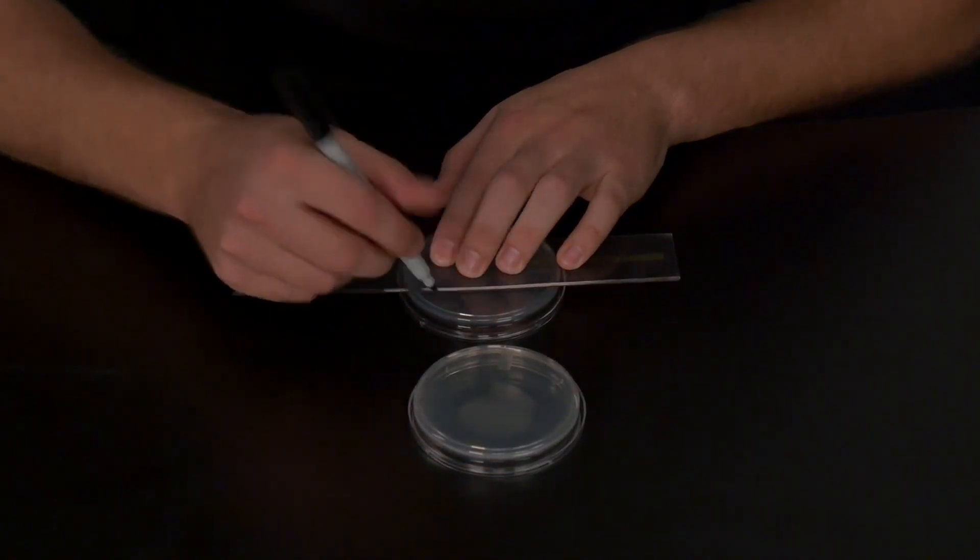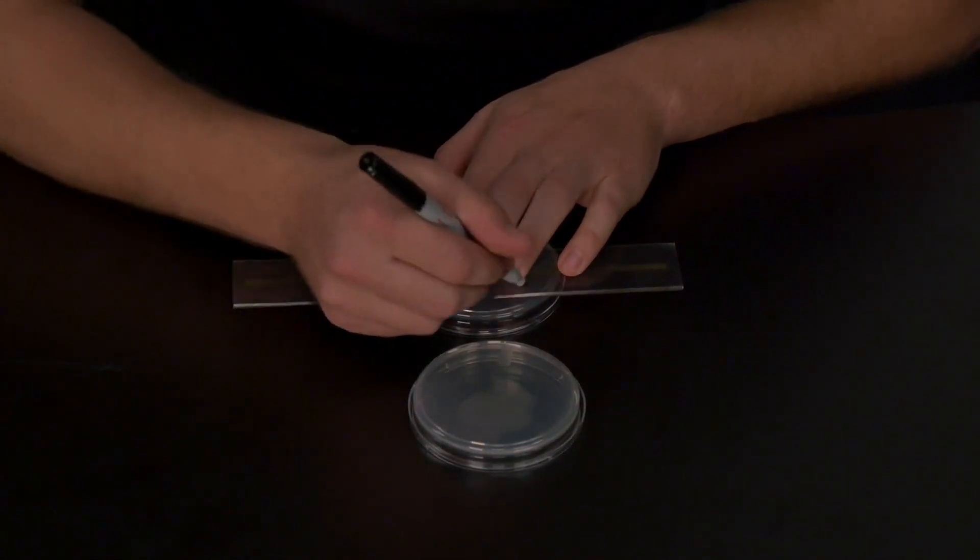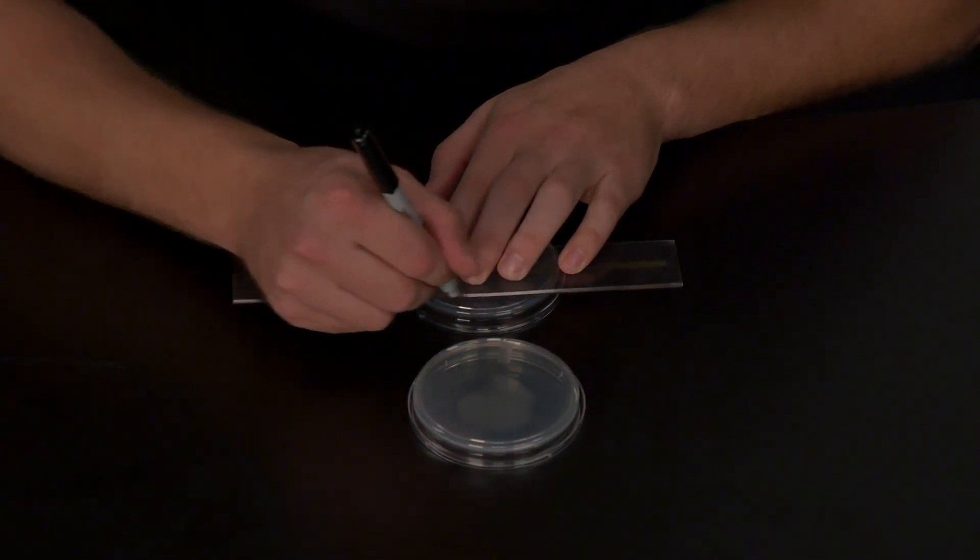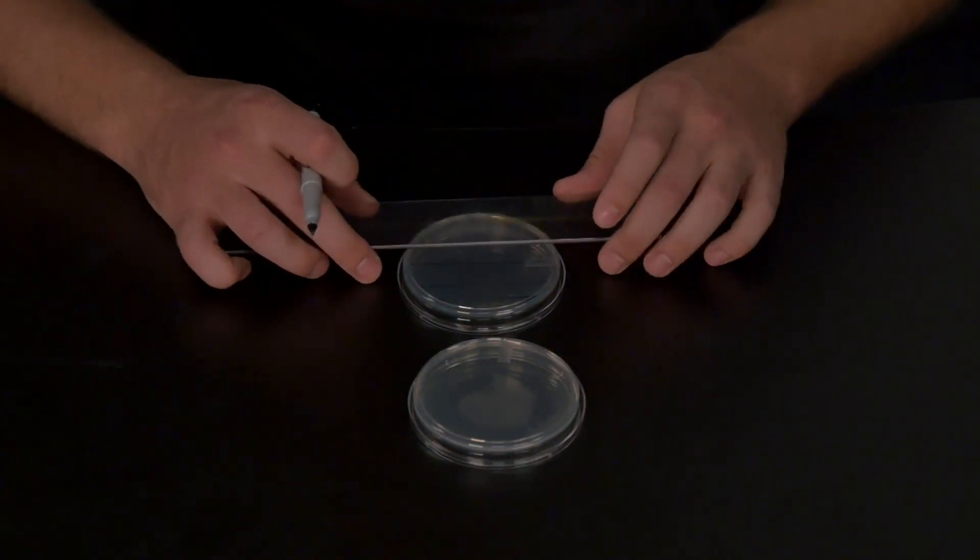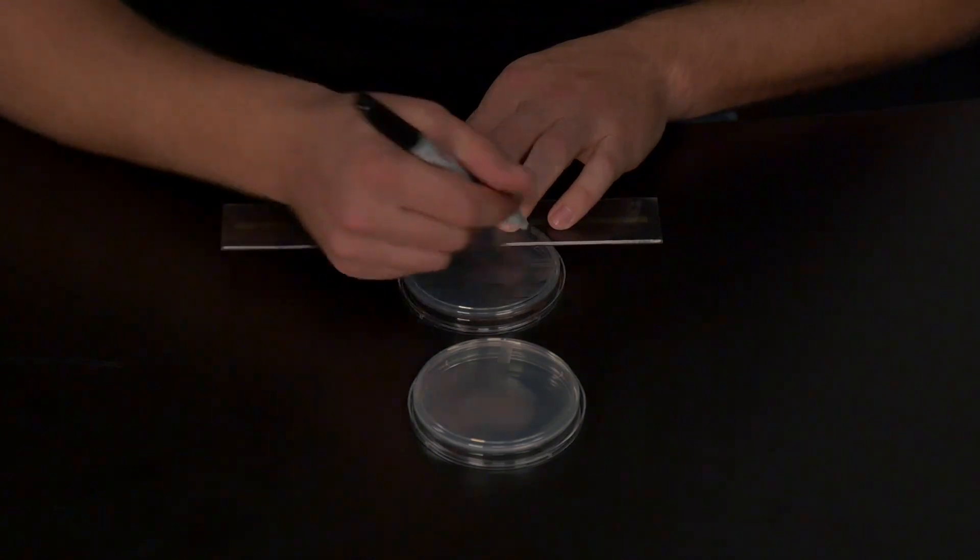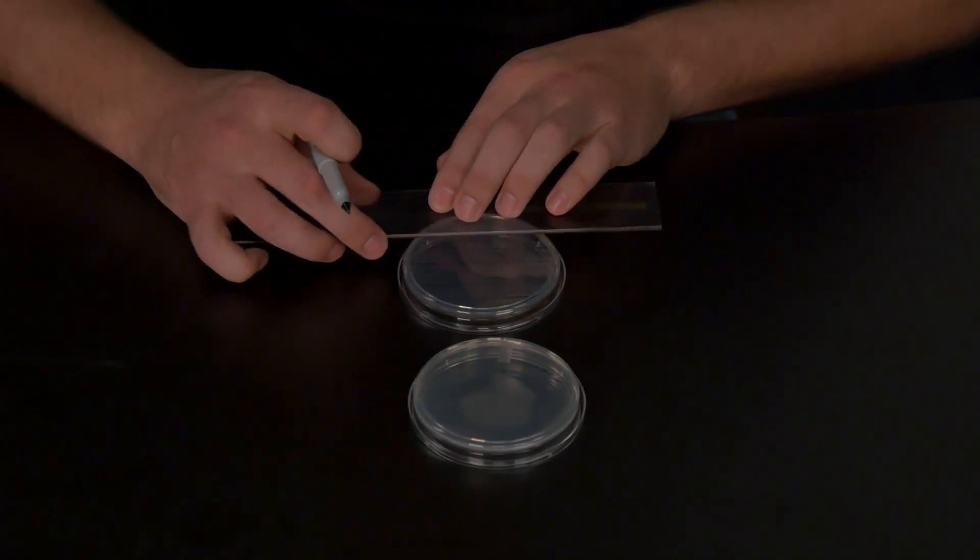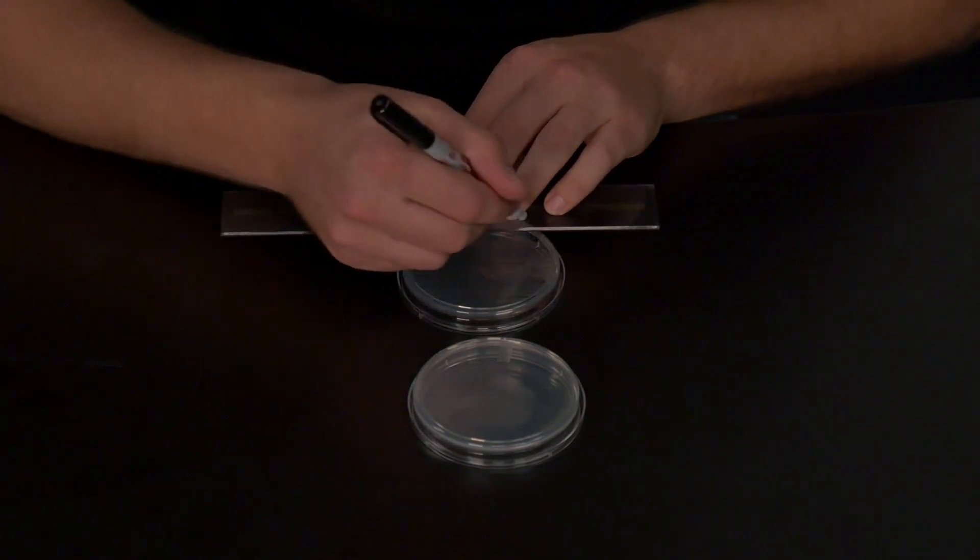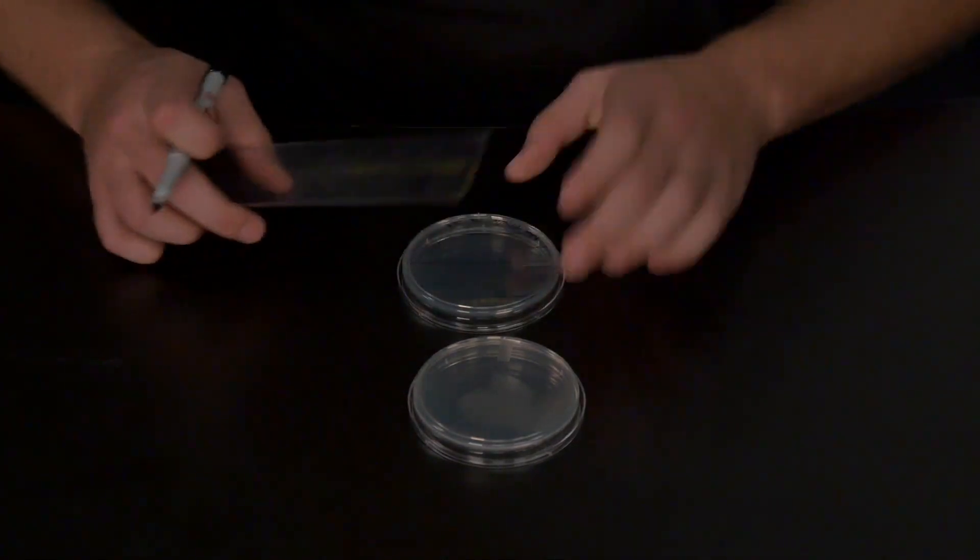Next, a grid system will be drawn on the bottom of the new plate. We ask that you draw a grid with 5 vertical lines and 5 horizontal lines and space them equally apart. This will allow you to transfer 32 colonies onto this plate.